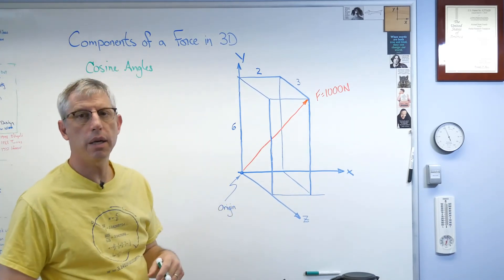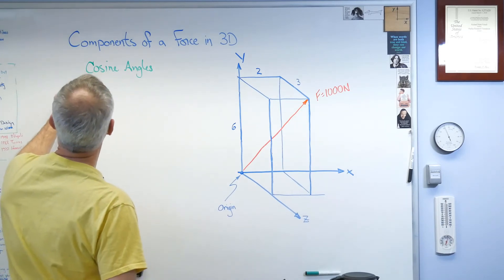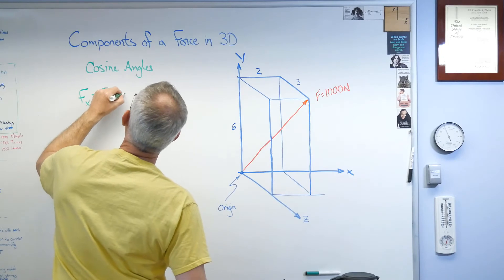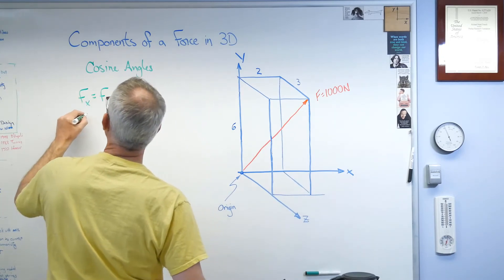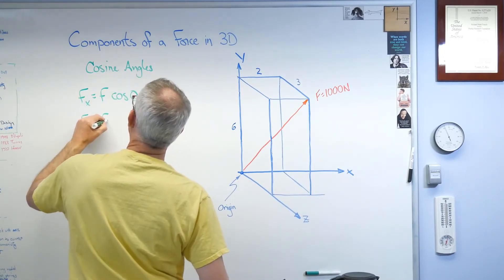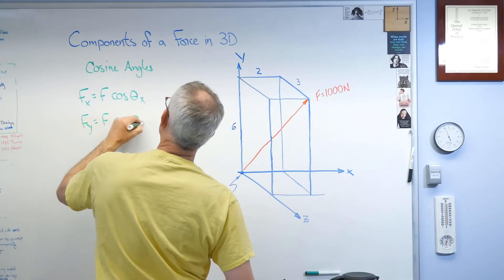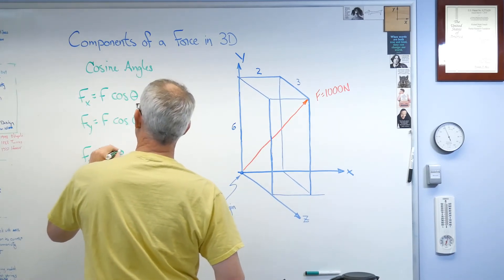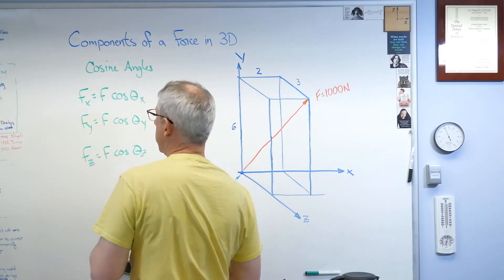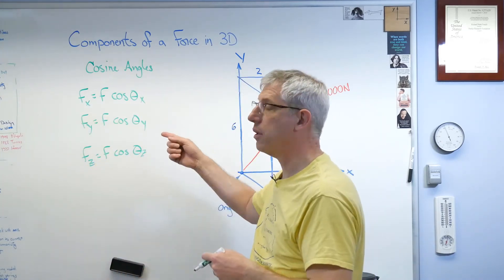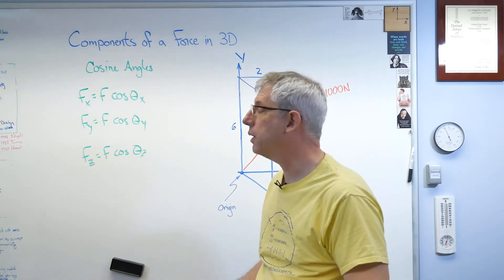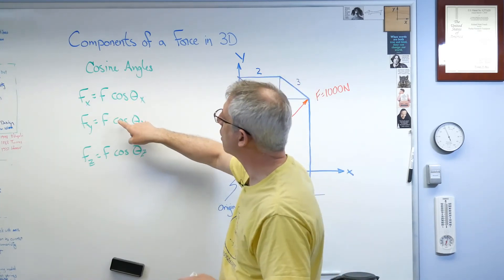Now, the big idea here is that we're going to be able to express Fx as F cosine theta x, Fy as F cosine theta y, and Fz as F cosine theta z. All right. Now, we already know what these are. We already figured them out. This is the i, j, and k components. So what are these angles? We know what this is. That's given. That's 1,000.